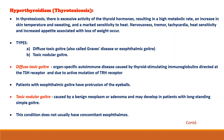In hyperthyroidism or thyrotoxicosis, there is excessive activity of thyroid hormones, resulting in a high metabolic rate, an increase in skin temperature and sweating, and marked sensitivity to heat. Nervousness, tremor, tachycardia, heat sensitivity, and increased appetite associated with loss of weight also occur. There are two types: diffuse toxic goiter and toxic nodular goiter. Diffuse toxic goiter includes a specific autoimmune disease caused by thyroid-stimulating immunoglobulins directed at the TSH receptor and due to active mutation of the TSH receptor. Patients with exophthalmic goiter have protrusion of the eyeballs. Toxic nodular goiter is mainly caused by a benign neoplasm or adenoma and may develop in patients with long-standing simple goiter, and does not usually have concomitant exophthalmos.